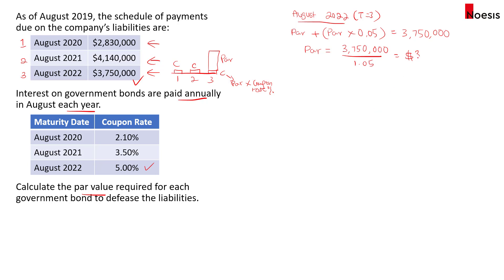That gives us a par value of $3,571,429 for the three-year bond. The coupon for this bond will be the par value multiplied by the coupon rate: $3,571,429 × 5% = $178,571.45.